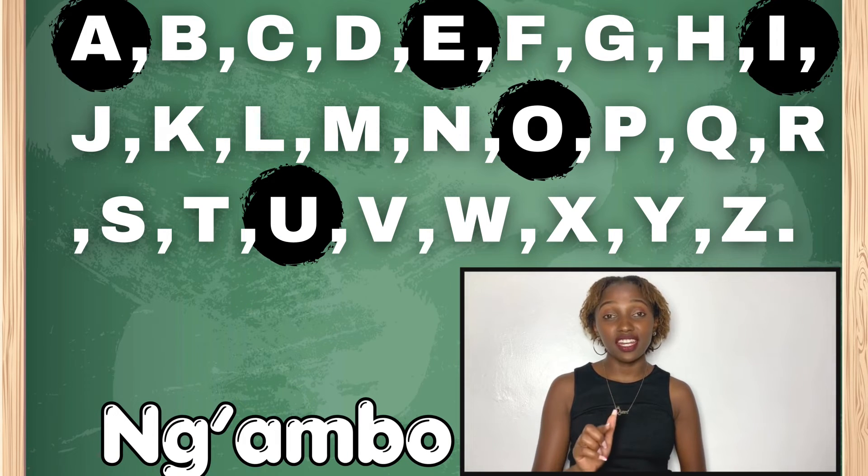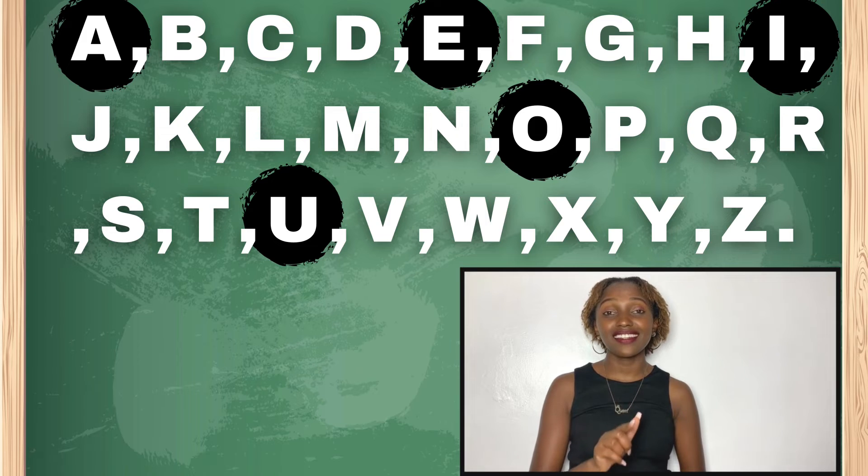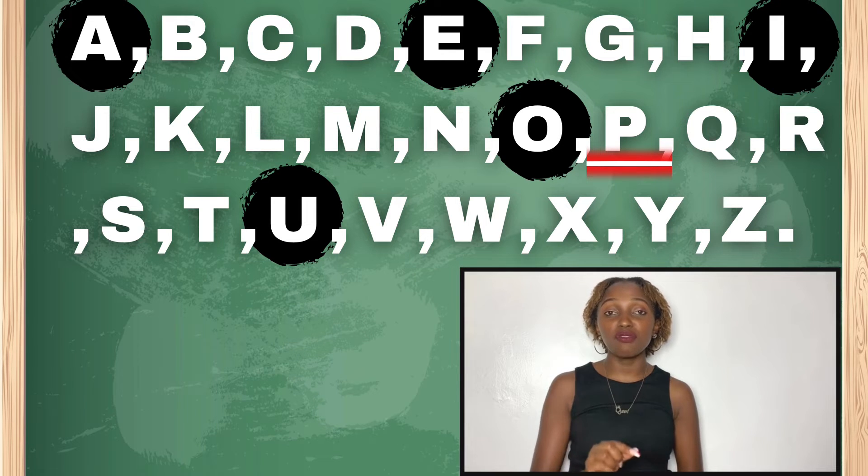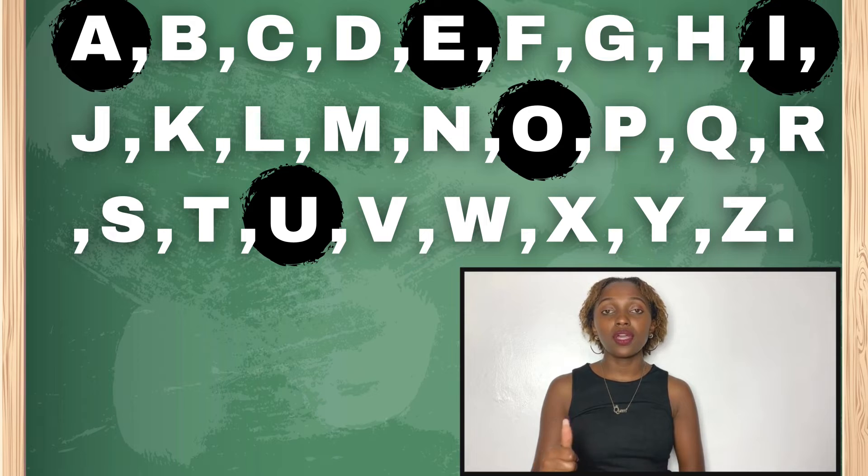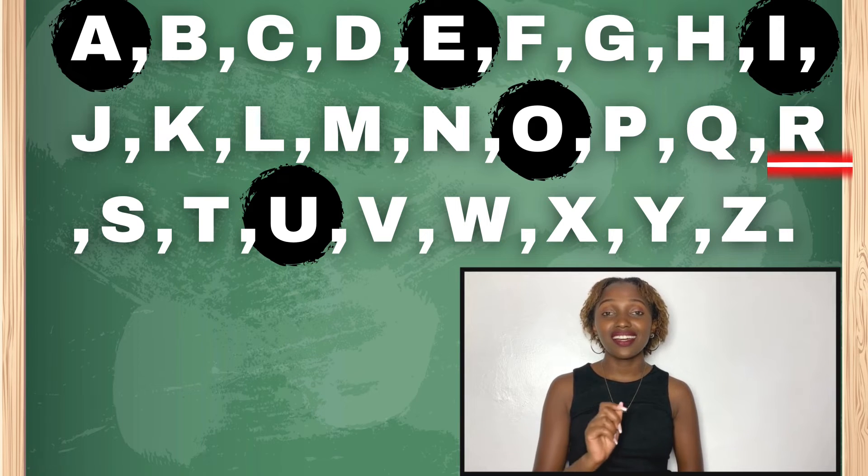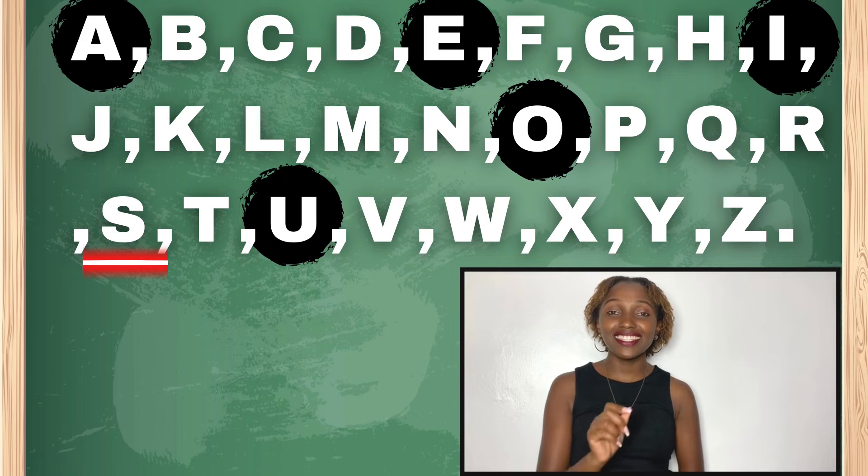Sasa tumetoka kwa N. Tukitoka kwa N, tunaenda kwa P. Kwa sababu tunatoka kwa O. O ni irabu. Kwego tunatoka kwa O, tunenda kwa konsonanti P. Kisha hatuna Q katika kiswahili. Kwa hivyo pia Q tunayondoa. Tunaenda kwa R, tena S.